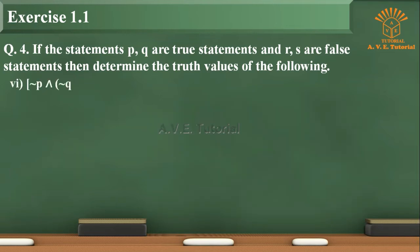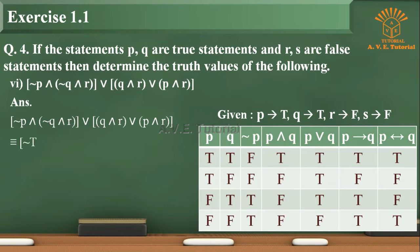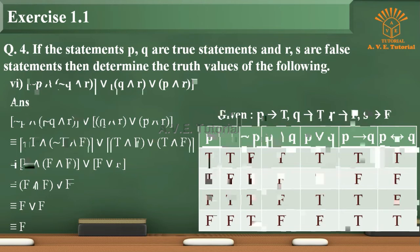Sub-question 6: negation of P and (negation of Q and R) or (Q and R) or (P and R). Given P is true, Q is true, R is false, S is false. This is equivalent to negation of T and (negation of T and F) or (T and F) or (T and F), which is equivalent to F and (F and F) or F or F, which is equivalent to F or F, which is equivalent to F.